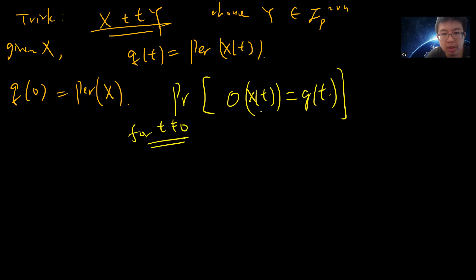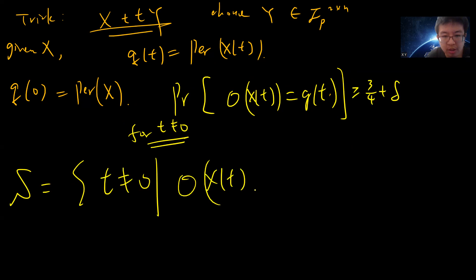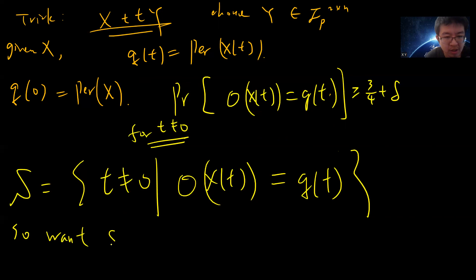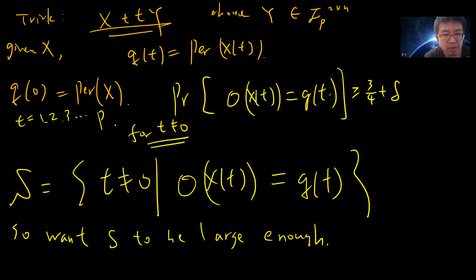We define S to be the set of non-zero t such that O(x(t)) equals q(t). We want S to be large enough. We can use t from 1 to p minus 1, so we have p minus 1 total points. The tool we use is the so-called reverse Markov inequality.